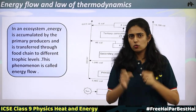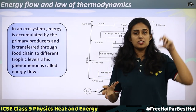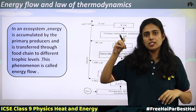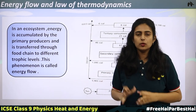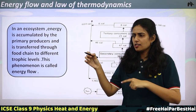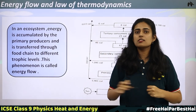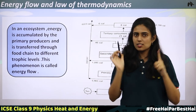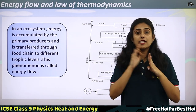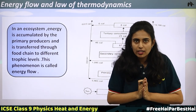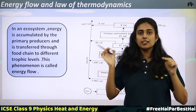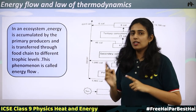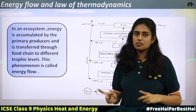Energy flow and the laws of thermodynamics. Energy flow starts from the sun → producers → primary consumers → secondary consumers → tertiary consumers → decay. Can energy go back from the tertiary consumers to the sun? No. So this is not a cyclic process — it is a linear and unidirectional process. Reverse direction is not possible. In an ecosystem, energy is accumulated by primary producers and is transferred through the food chain to different trophic levels. This phenomenon is called energy flow.